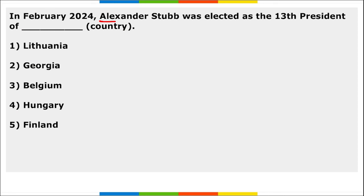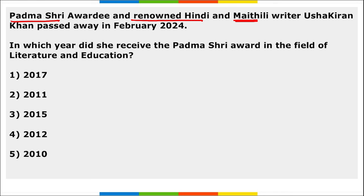In February, Alexander Stubb was elected as the 13th President of Finland. Next, Padma Shri awardee and renowned Hindi and Maithili writer Usha Kiran Khan recently passed away. She received the Padma Shri in the field of literature and education in the year 2015.